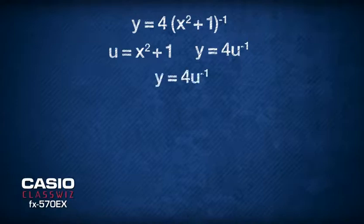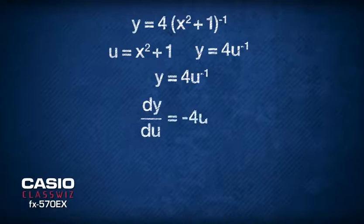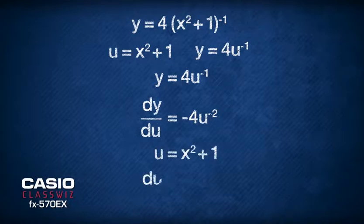Differentiating y with respect to u gives us dy/du = -4u^(-2). Differentiating u with respect to x gives us du/dx = 2x.